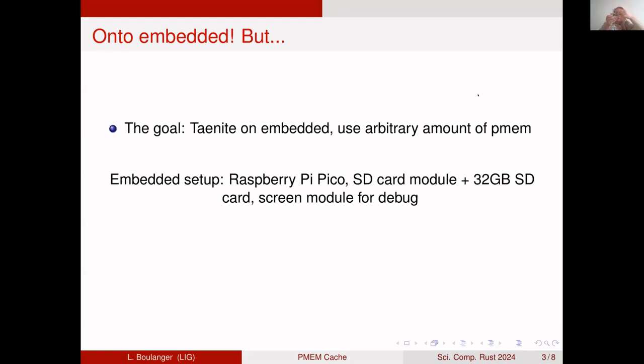It has 264 kilobytes of RAM, but attached to it I have an SD card module with a 32 gigabyte SD card. The goal was to use 32 gigabytes of RAM in this system to augment the system and showcase Taenite. The problem is that Taenite, developed on Linux, usually uses memory mapping to map persistent memory into the address space of the program. But we don't really have that on an embedded system, at least this one.